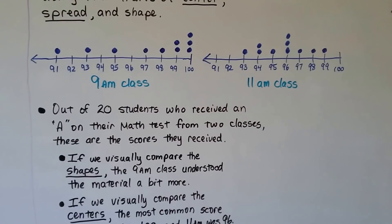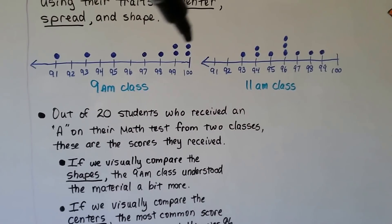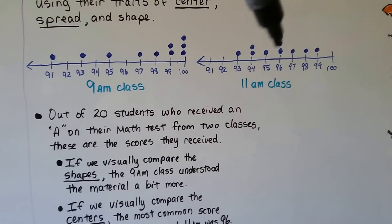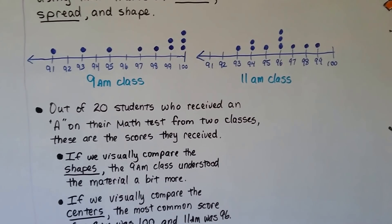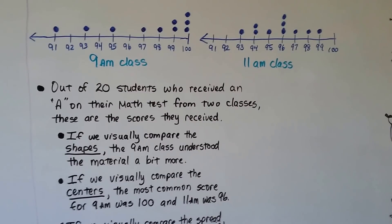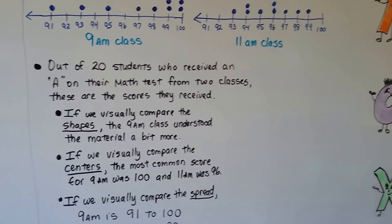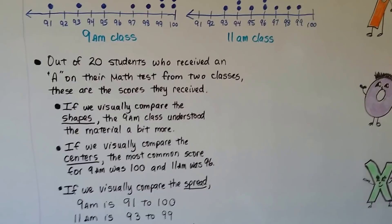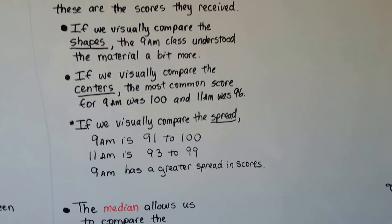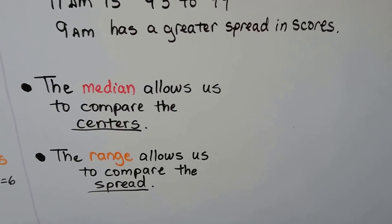If we visually compare the shapes, the 9 a.m. class understood the material a bit more — we can see how over here by 99 and 100 it has more dots, and the 11 a.m. class is more around here. If we visually compare the centers, the most common score for 9 a.m. was 100 and for 11 a.m. was 96. If we visually compare the spread, 9 a.m. is 91 to 100 and 11 a.m. is 93 to 99, so 9 a.m. has a greater spread in scores. The median allows us to compare the centers; the range allows us to compare the spread.